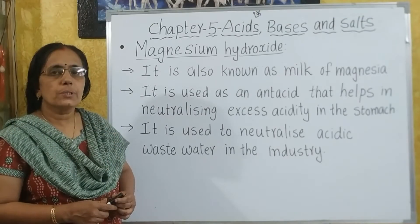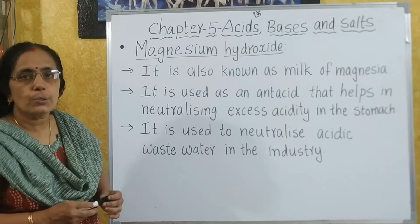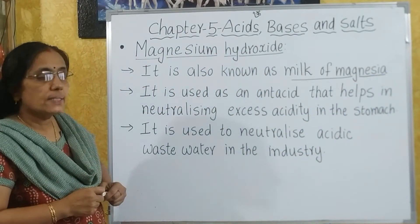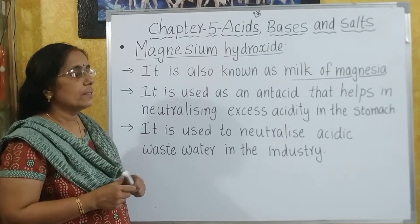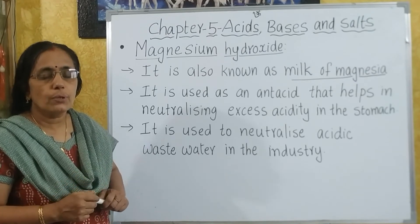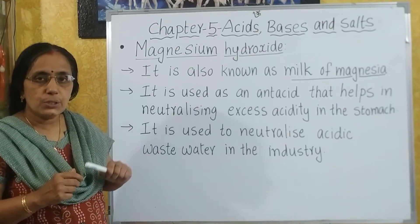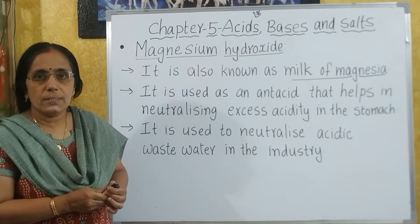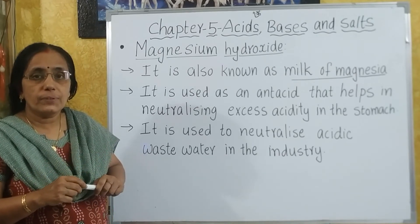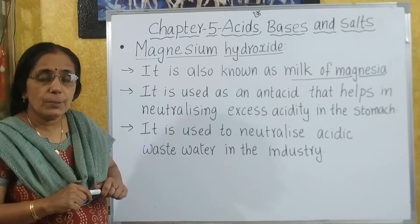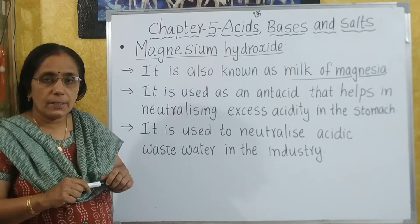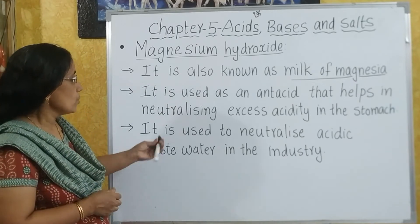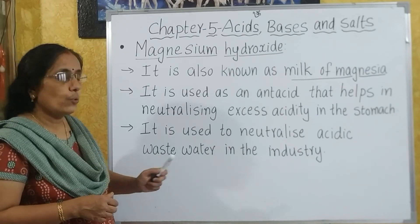Now we will see the uses of magnesium hydroxide. Magnesium hydroxide is also known as milk of magnesia. It is used as an antacid that helps in neutralizing the excess acidity in the stomach. You might have seen people taking Eno for acidity problems — magnesium hydroxide is one of the major components of such antacids. It is a very weak base that can be taken into our body to neutralize the acidic component in our stomach. It is also used to neutralize acidic waste water in industry.